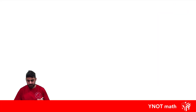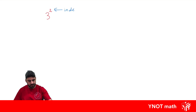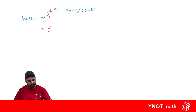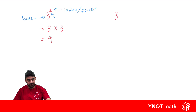What are indices? Indices are just a small number that goes in the top right of another number. This is your index — or power, there's another name for it — and this number here becomes the base. What does it actually mean? It means we're taking that base number and multiplying it by itself this many times. You can see we've got three times three — there are two threes because the index or power was a two, and three times three is obviously equal to nine.